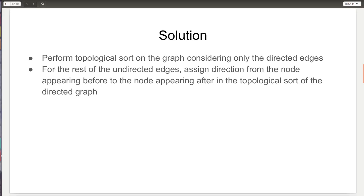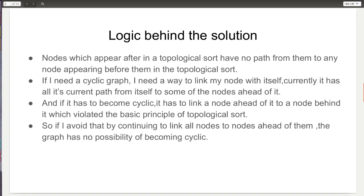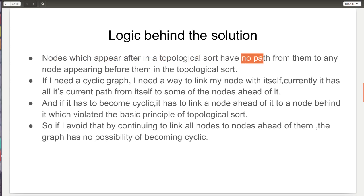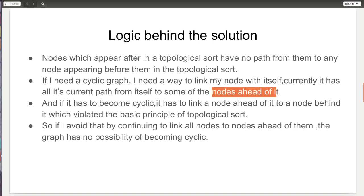Now you might be thinking: we know the solution, but what's the logic behind it? Before understanding the logic, let's look at the basic principle of topological sort, which is that all the nodes which appear after some node in topological sort have absolutely no path from them to any node appearing before them in the topological sort. If I need a cyclic graph, I have to link my current node with itself, and currently all the paths from my current node are to some of the nodes which lie ahead of it in the topological sort.